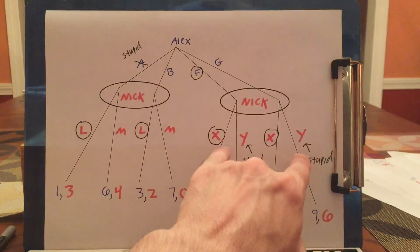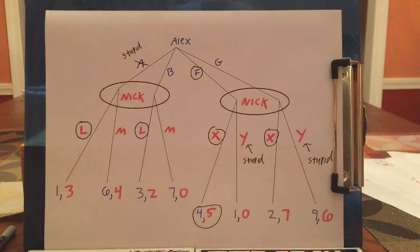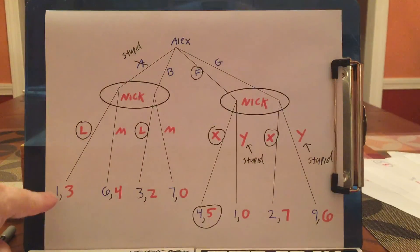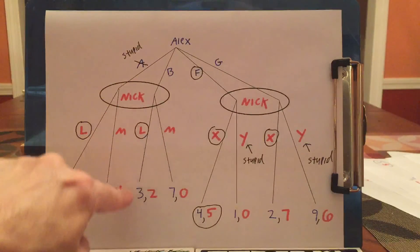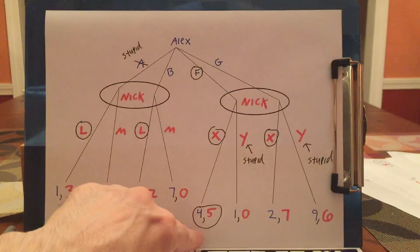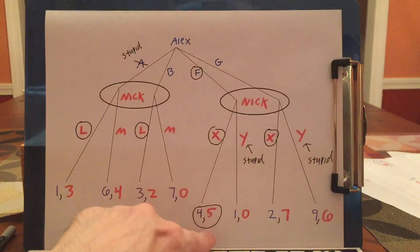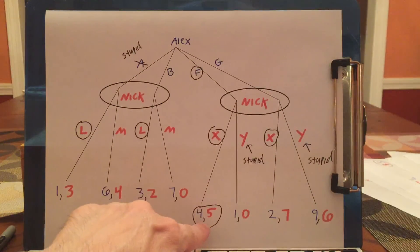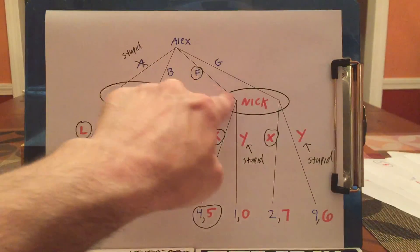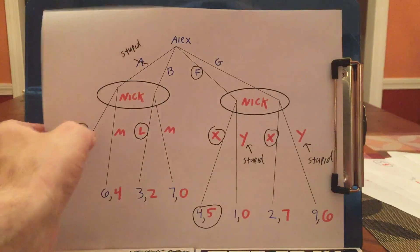Nick, if he gets to this information set, should play L. And if Nick is over in the other information set, since Y is stupid, he should pick X. This causes Alex to calculate: A would lead to 1, B would lead to 3, F would lead to 4, and G would lead to 2. The best Alex can do is get 4, so the game has the outcome of the parties going F to X.